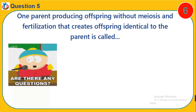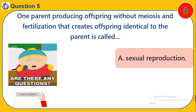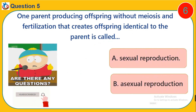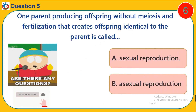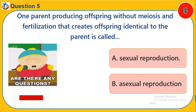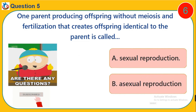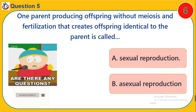Question 5. One parent producing offspring without meiosis and fertilization that creates offspring identical to the parent is called: A. Asexual reproduction. B. Sexual reproduction.